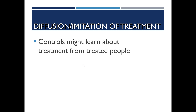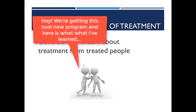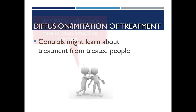The first social threat is diffusion or imitation of treatment, where those in the control or comparison group learn about the treatment from those in the treatment group — essentially people talking to each other. For example, kids in the reading comprehension group tell their friends in the other classroom about the new interactive Chromebook program and what they're learning, so the comparison group ends up receiving some version of the treatment, which can affect the results.